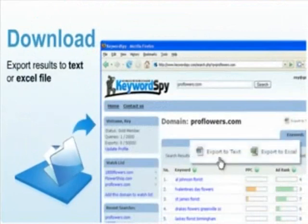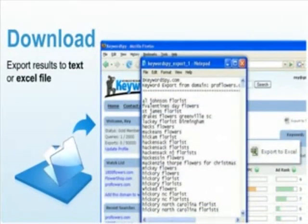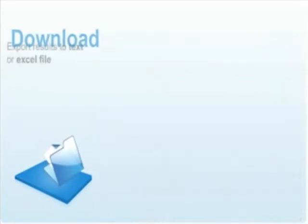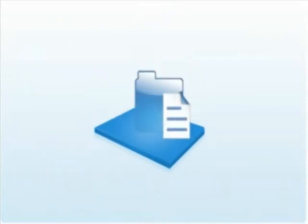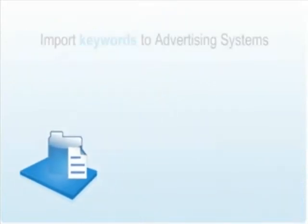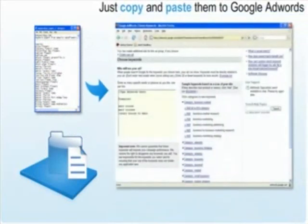Keyword Spy does not only show you your competitors' keywords, but also gives you the power to automatically export results to either text or Excel file format. With the competitors' keywords in your hand, all you need to do to start your own ad campaign is to copy and paste keywords in your selected advertising system, like Google AdWords for example, to achieve desired traffic and generation of leads and sales.